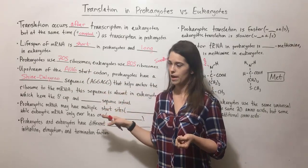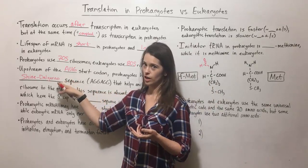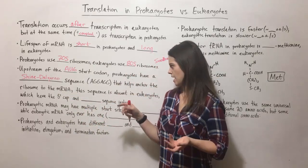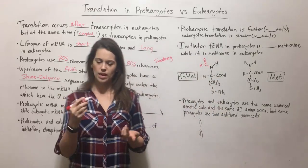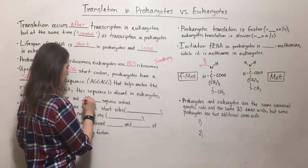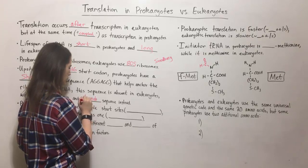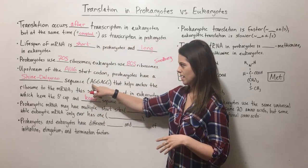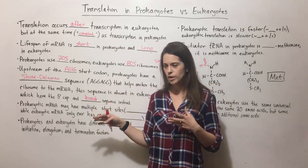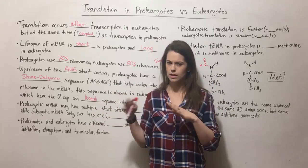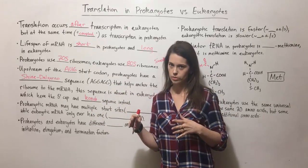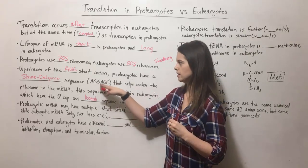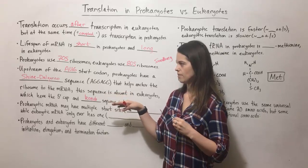This Shine-Dalgarno sequence is absent in eukaryotes. Eukaryotes don't have a Shine-Dalgarno sequence, but they still have ways to anchor their 80S ribosomes to their mRNA — that is through using the five-prime cap and something called a Kozak sequence. The Kozak sequence is not as rigid as AGG; there are a few positions that have to be the same, but some of the surrounding positions are variable, so it doesn't have a very defined sequence the way the Shine-Dalgarno sequence does.